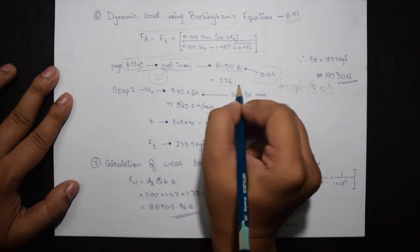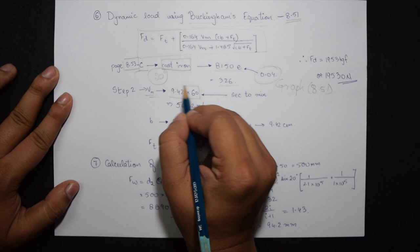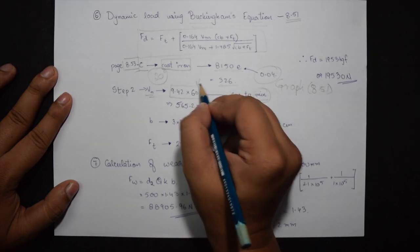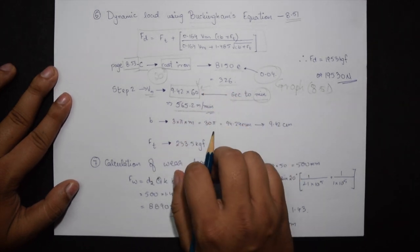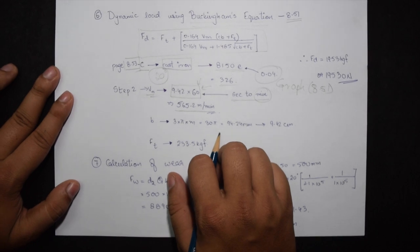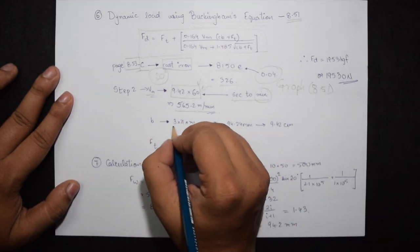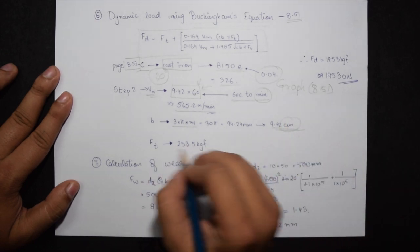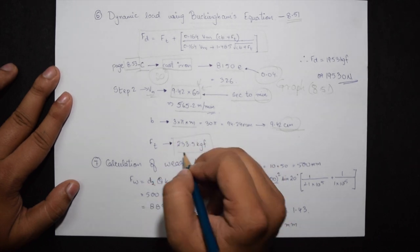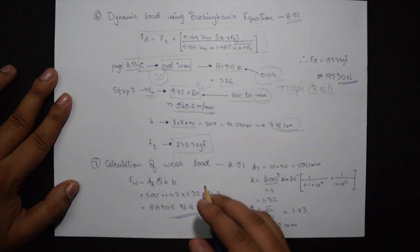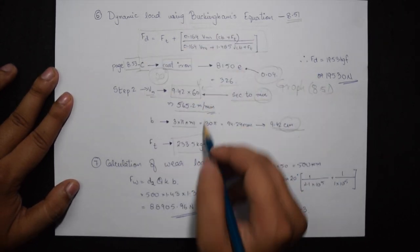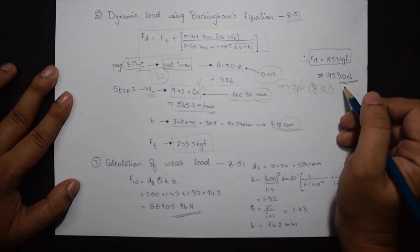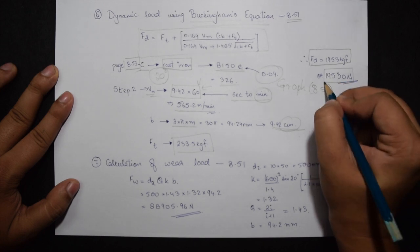The value of VM from step 2 we got as 9.42 meters per second but here the value has to be put in meters per minute. Therefore we'll be multiplying it by 60 and the value turns out to be 565.2 meters per minute. The value of B again was told earlier. This turns out to be 9.42 centimeters because we want to put it in centimeters and the value of FT is 233.5 kgf. Substituting all these values in the equation above we get the value of FD or the dynamic load using Buckingham's equation as 1953 kgf or in newtons would be 19530.